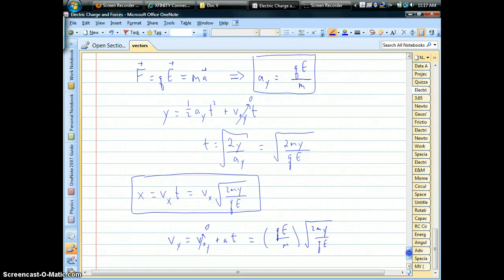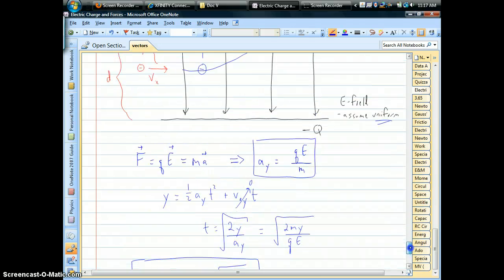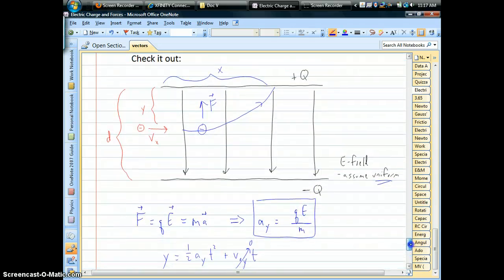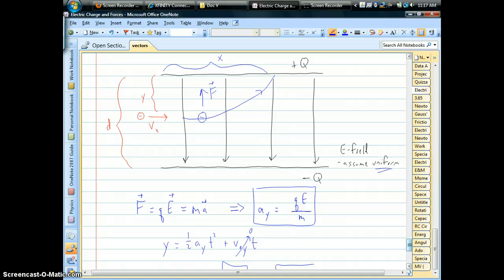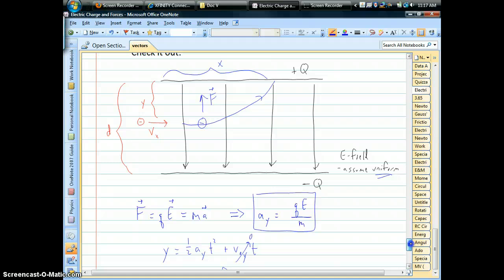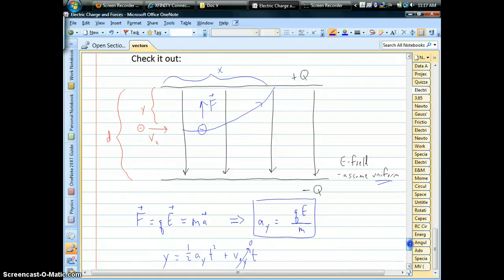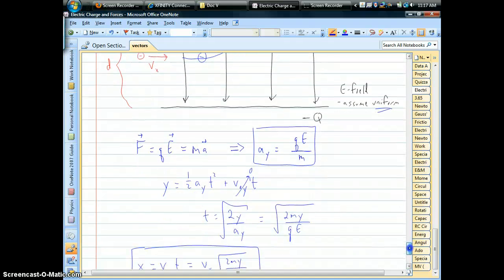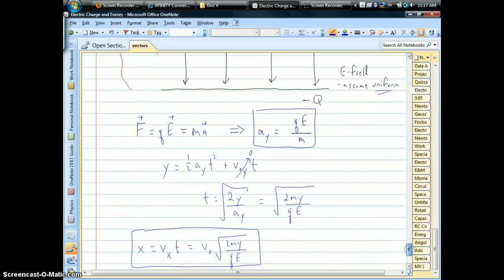So you can do all the usual constant acceleration type problems. So that's the essence of this sort of setup. You can do projectile motion with charges as long as you have a constant electric field. And that constant electric field replaces gravity for something like the ball rolling off the tabletop or something like that.